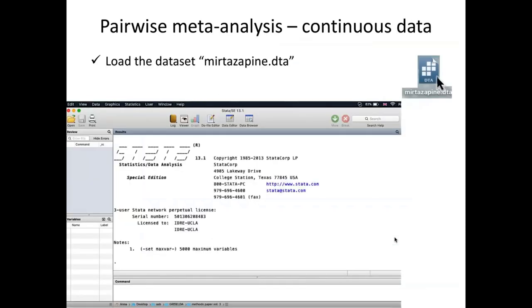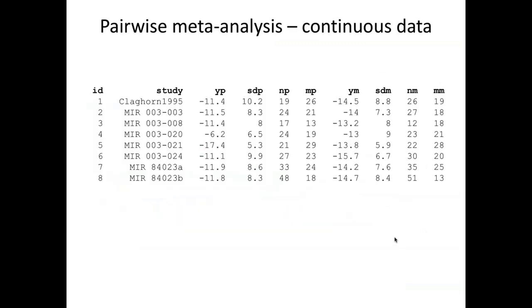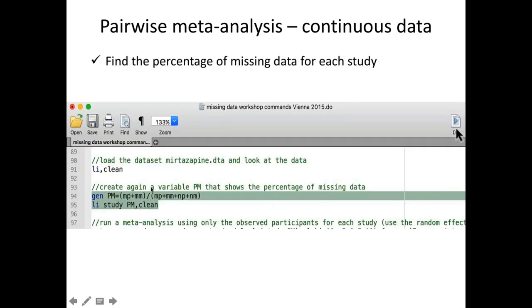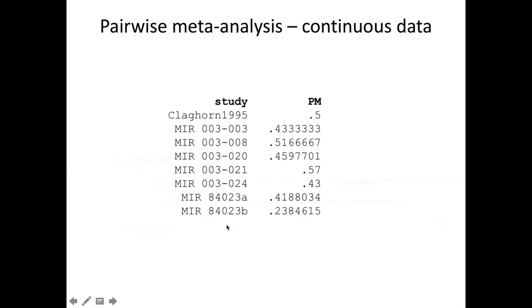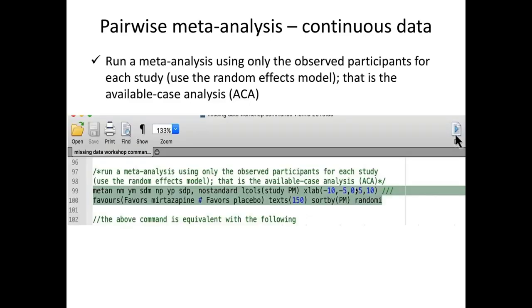Let's also look quickly at the continuous dataset. The commands are similar. We load the mirtazapine dataset. The data includes variables for the placebo group and the mirtazapine group. Running the command to examine missing data rates, we can see that most studies have large missing data rates, so we expect this will affect the results.